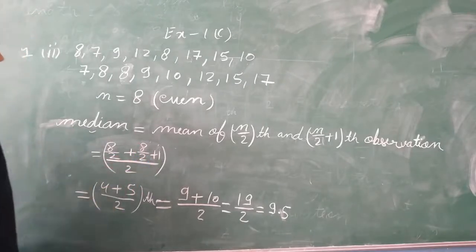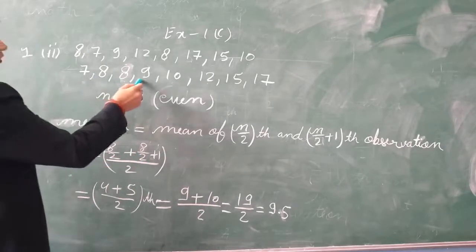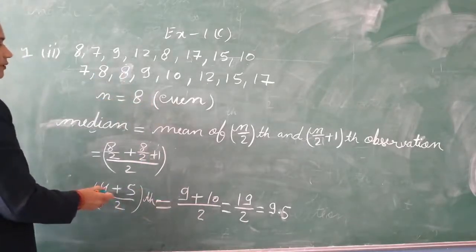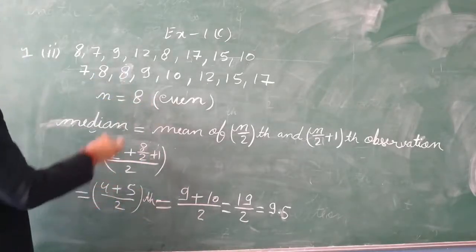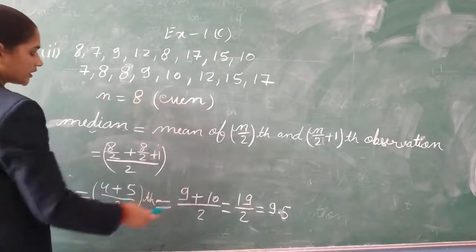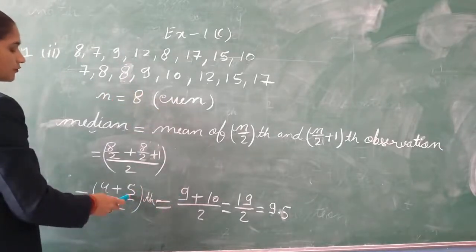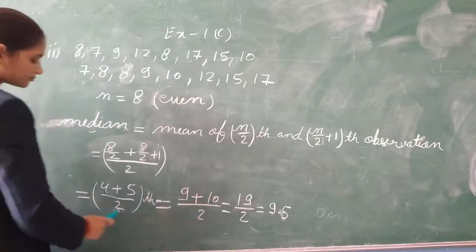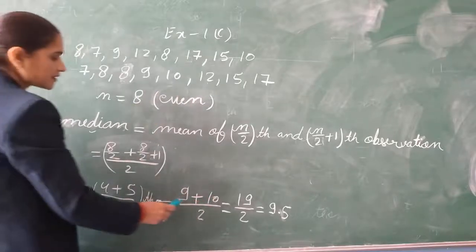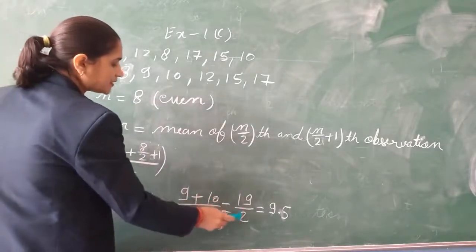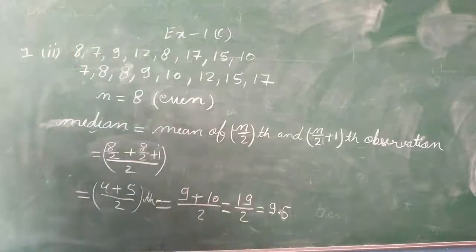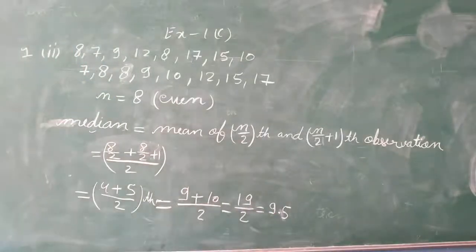The 4th observation is 9 and the 5th observation is 10. So 9 plus 10 divided by 2 gives us 9.5. This is the required median.